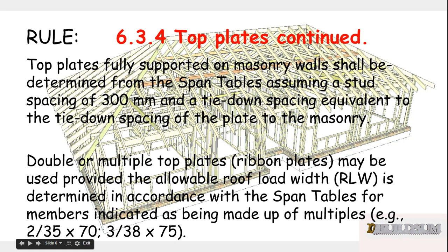Top plates fully supported on masonry walls shall be determined from the span tables assuming a stud spacing of 300 millimetres and a tie-down spacing equivalent to the tie-down spacing of the plate. Double or multiple top plates — known as ribbon plates — may be used, provided the allowable roof load width is determined in accordance with the span tables for members indicated as being made up of multiples, such as 2/35×70s or 2/38×75s.